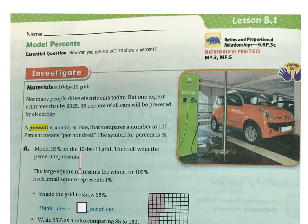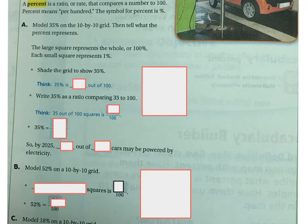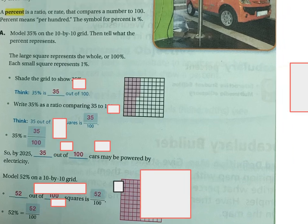Model 35% on the 10 by 10 grid and then tell what the percent represents. The large square represents the whole or 100 percent and each small square represents 1%.